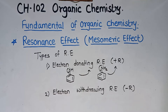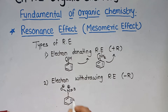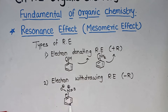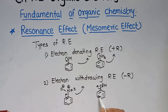For the electron withdrawing resonance effect, we consider the example of nitrobenzene. The nitrogen in nitrobenzene carries a positive charge, making it electron deficient. So it removes electrons from the benzene ring, decreasing electron density — hence it is an example of the −R effect. Similarly, a cyanide group attached to a benzene ring also removes electrons and is an example of the −R effect.